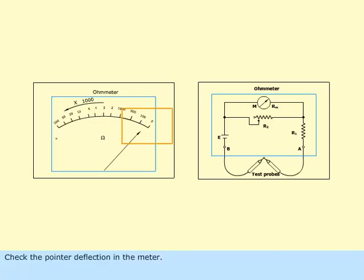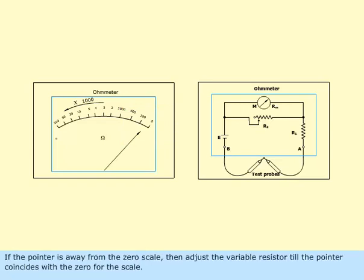Check the pointer deflection in the meter. If the pointer is away from the zero scale then adjust the variable resistor till the pointer coincides with the zero for the scale.